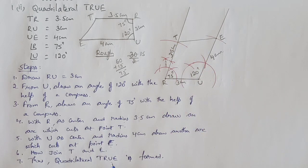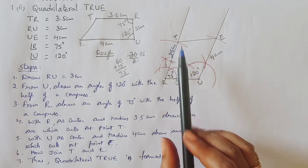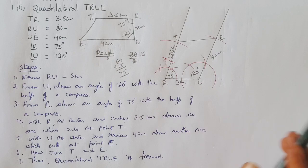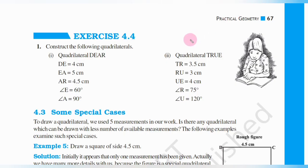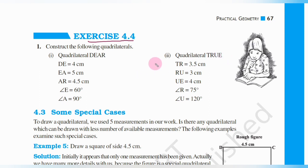Quadrilateral TRUE is formed. Now we have completed exercise 4.4 with two constructions — quadrilateral DEAR and quadrilateral TRUE. I hope you all understood very well, children. If you have any doubts, please write in the comments section. See you in the next class with the next video. Until then, thank you children, bye bye, have a nice day.